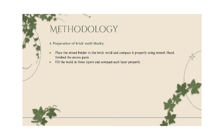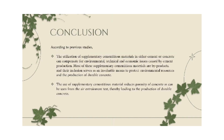For preparation of brick molds: place the mix binder in the brick mold and compact it properly using a trowel. Hand-finish the excess paste and fill the mold in 3 layers, compacting each layer properly. To conclude, according to previous studies, the utilization of supplementary cementitious materials in either cement or concrete can compensate for environmental, technical, and economic issues caused by cement production. Most of these supplementary cementitious materials are by-products, and their inclusion serves as an invaluable means to protect environmental resources and produce durable concrete. The use of supplementary cementitious materials reduces the porosity of concrete, as seen from air entrainment tests, thereby leading to the production of durable concrete.